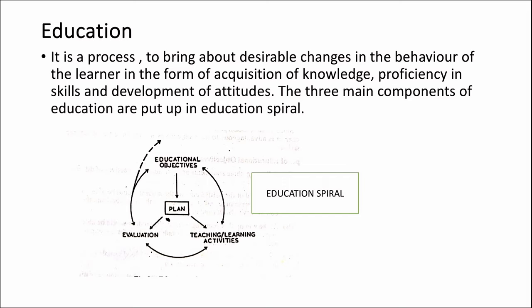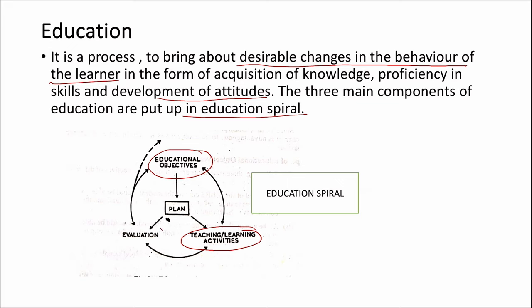Now we move on to the education spiral. Education is a process to bring about desirable changes in the behavior of the learner in the form of acquisition of knowledge, proficiency, skills and development of attitudes. The three main components of the education spiral are: educational objectives — from which we plan teaching and learning activities — then we evaluate the students and either focus on the same objective or move to new objectives. This cycle continues and is not unidirectional — that is why it is called the education spiral.